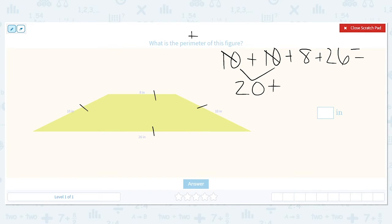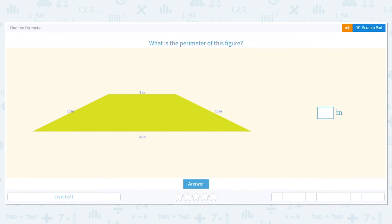Then I'm going to add 26 to it, so 20 plus 26 equals 46. But what numbers have I still not added on? 8. So I still need to do 46 plus 8. 6 plus 8 is 14, put down the 4, carry the 1, equals 54. So my perimeter is 54 inches.